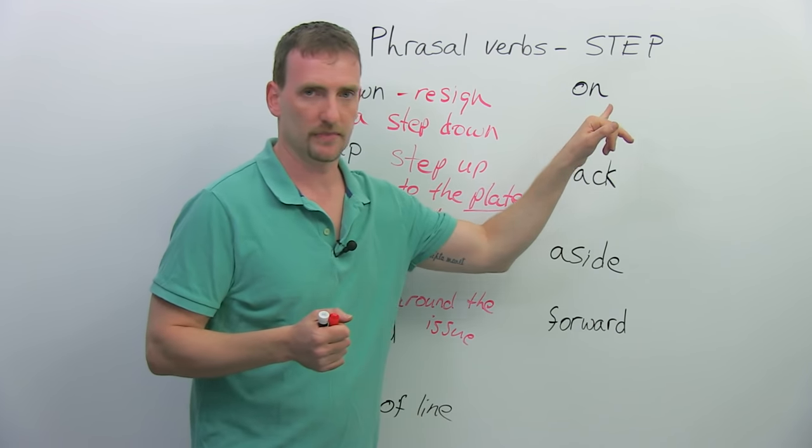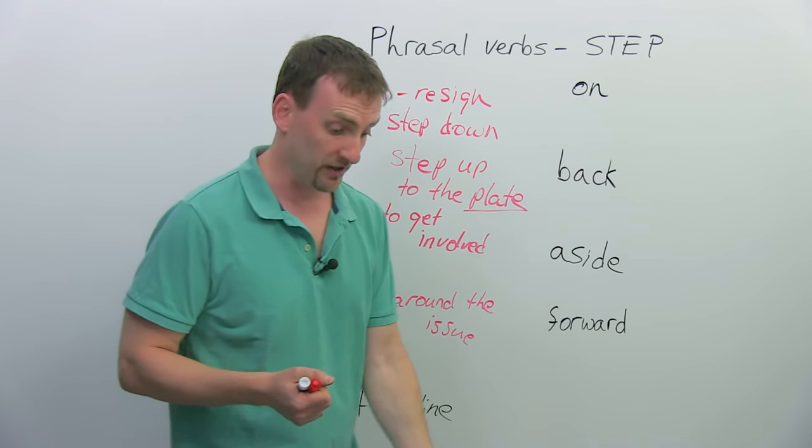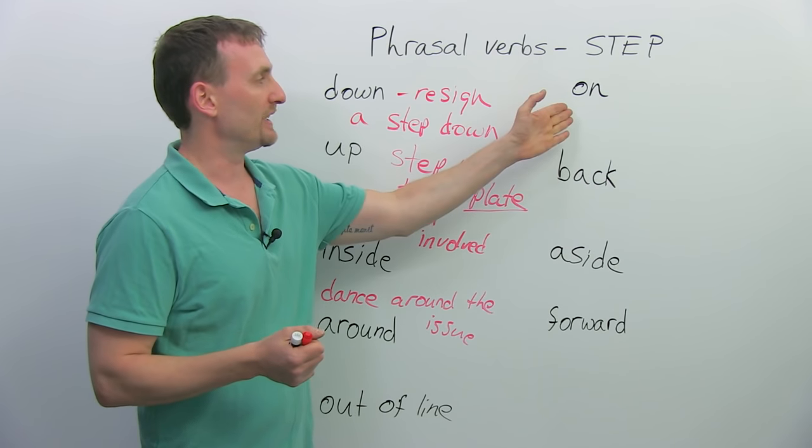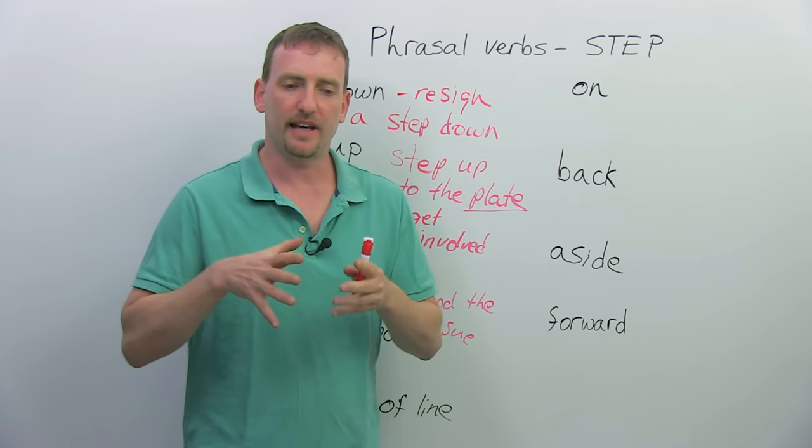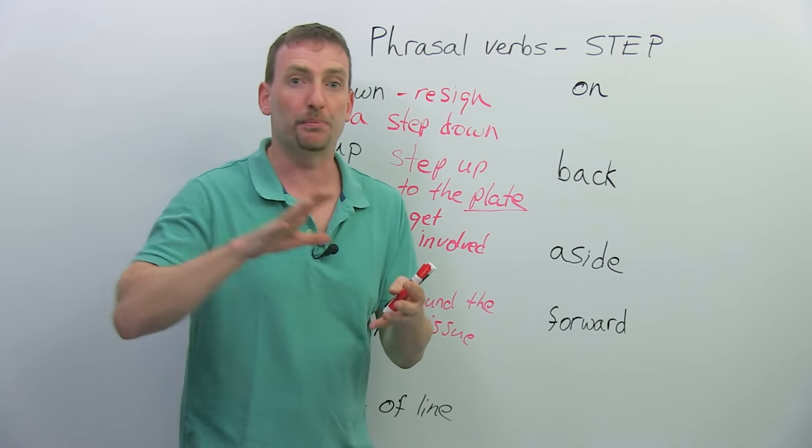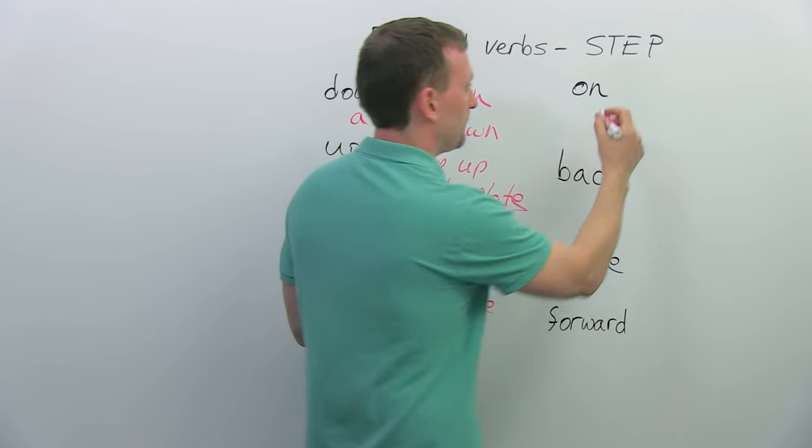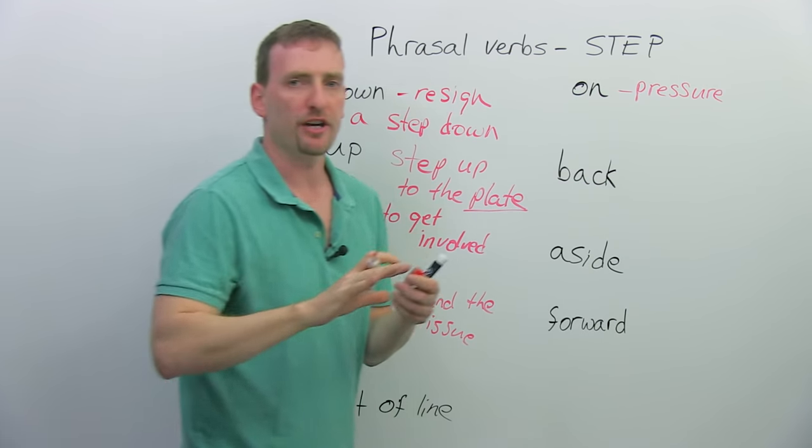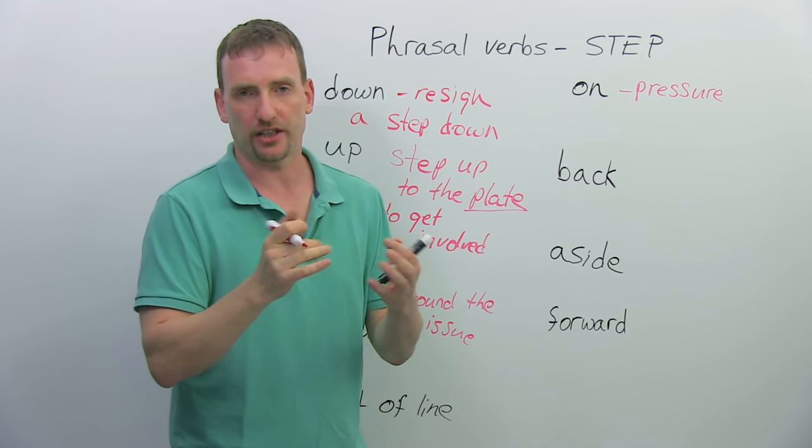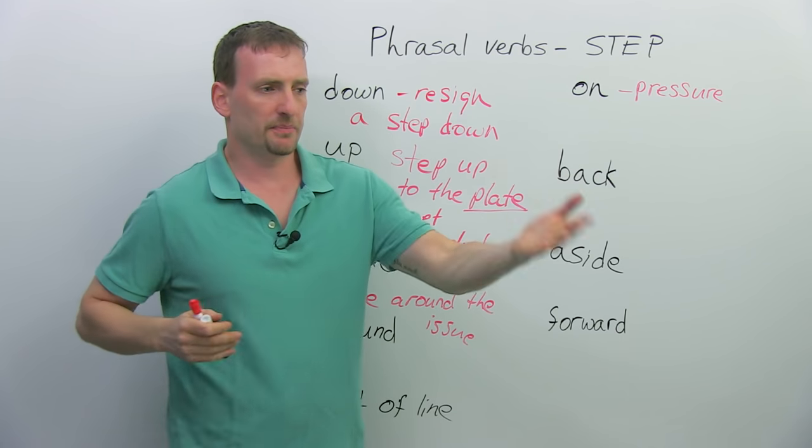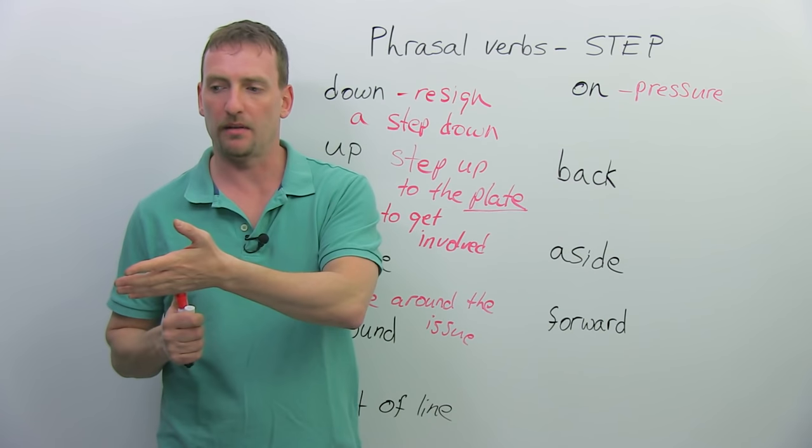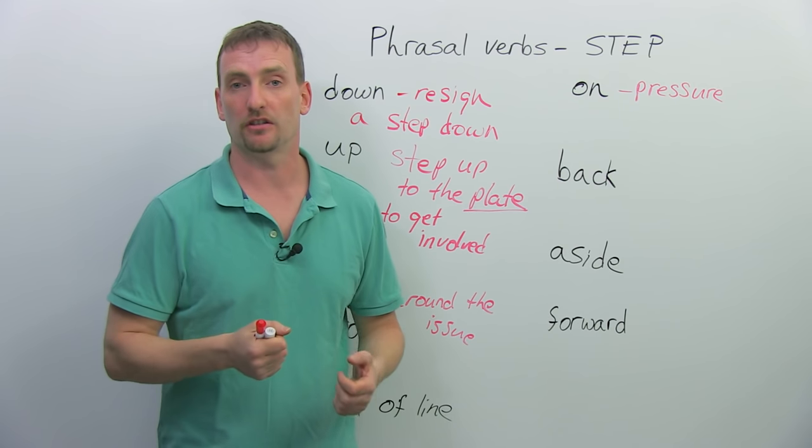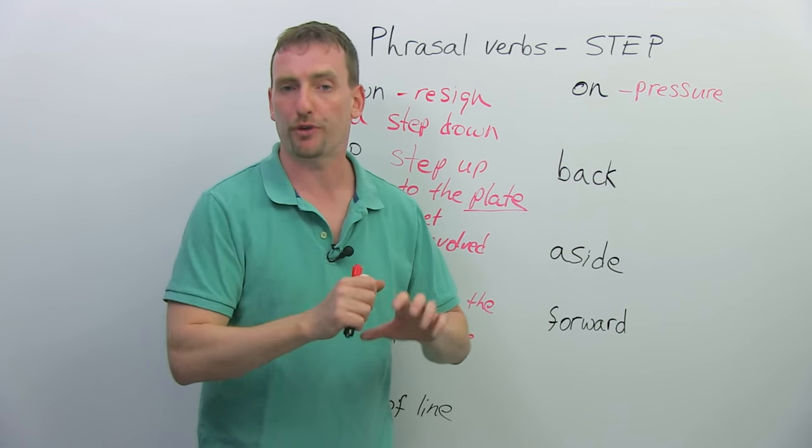Step on. Again, you can step on something. If there's a bug and you don't like it, you just step on it and it's dead. No problem. But you can also step on something. So, if you step on something means you're applying pressure. You're applying pressure or you're increasing whatever the situation is. So, this person is not doing his work, so I tell the manager, I'm the big boss of the company, this is a worker. I say to the manager, step on him, get him to work harder. Just apply more pressure.